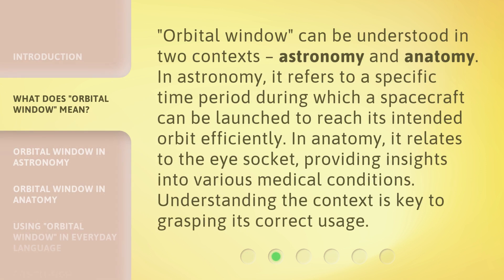Orbital Window can be understood in two contexts: astronomy and anatomy. In astronomy, it refers to a specific time period during which a spacecraft can be launched to reach its intended orbit efficiently. In anatomy, it relates to the eye socket, providing insights into various medical conditions. Understanding the context is key to grasping its correct usage.